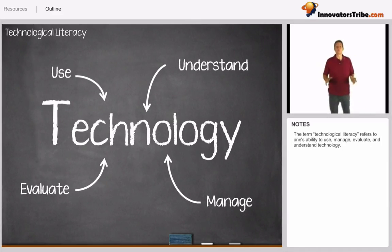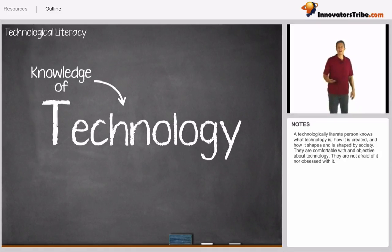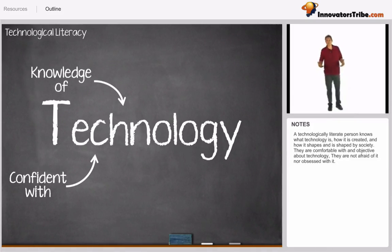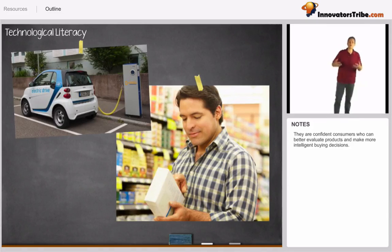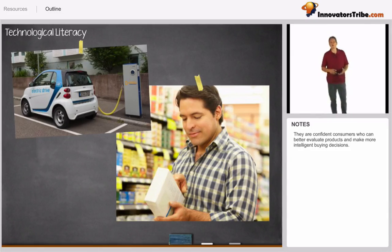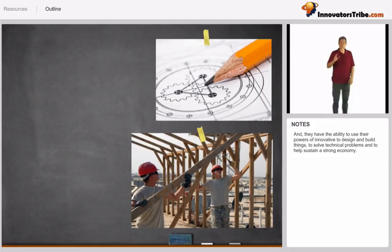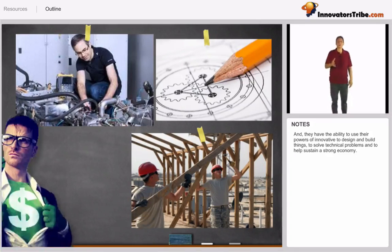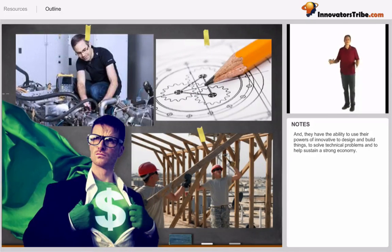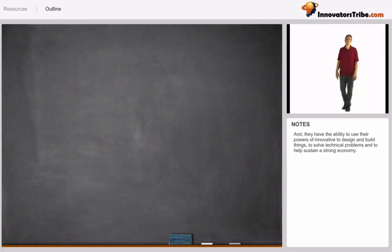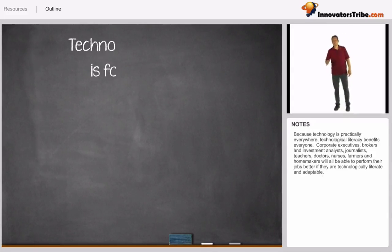A technologically literate person knows what technology is, how it's created, and how it shapes and is shaped by society. They are comfortable with and objective about technology. They're not afraid of it, nor are they obsessed with it. They're confident consumers who can better evaluate products and make more intelligent buying decisions. They have abilities to use their powers of innovation to design and build things, to solve technical problems, and to help sustain a strong economy. Because technology is practically everywhere, technological literacy benefits everyone.